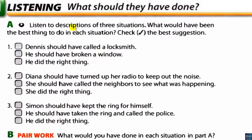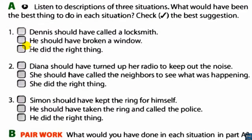Exercise number 11, Listening — 'What should they have done?' Page 90. Listen to descriptions of three situations. What would have been the best thing to do in each situation? You have three answer choices for each situation. Check the best suggestion.